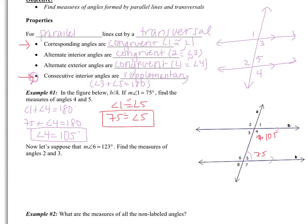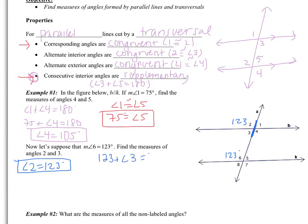Now the second part of example 1 uses the same figure. This time angle 6 is 123 degrees, and we need to find angles 2 and 3. Angles 2 and 6 are corresponding — both above their respective lines and to the left of the transversal — so they're congruent. If angle 6 is 123, angle 2 is also 123. Angles 2 and 3 form a linear pair, so 123 plus angle 3 equals 180, giving angle 3 equals 57 degrees. You also could have noticed that angles 3 and 6 are consecutive interior angles, so they're supplementary as well.